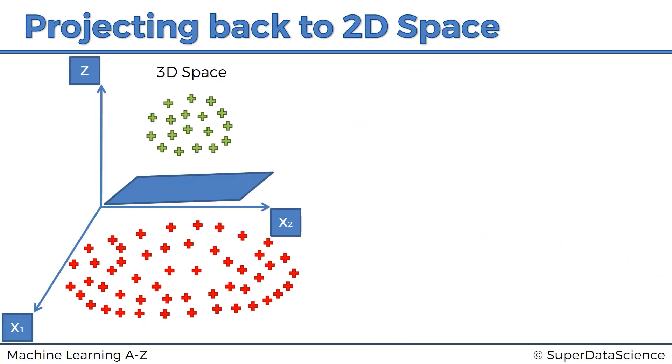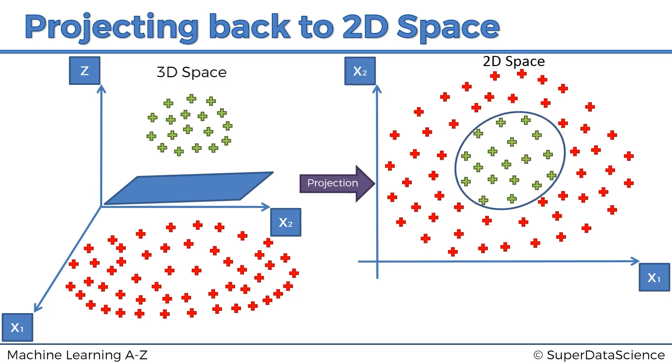So the support vector machine algorithm has helped us build this hyperplane. And then basically, so we've got this result, then we just projected back into our two dimensional space. And we've got this circle that encompasses our classes or separates our classes. And there we go. We've got the nonlinear separator.